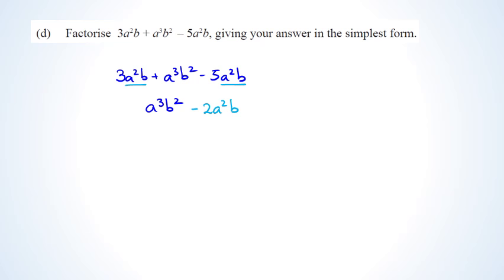Looking at a cubed and a squared, I can see that a squared is a common factor. There are no numbers to worry about. Then looking at b squared and b, b is a common factor. So I can write this as a squared b times ab minus 2. This is the fully factorized and simplified answer, which gives a merit grade.